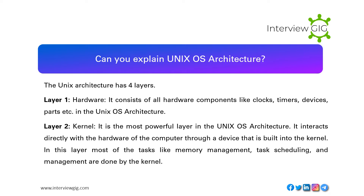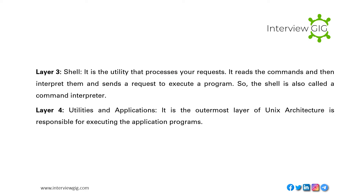In the kernel layer, most of the tasks like memory management, task scheduling, and process management are done. Layer 3 — Shell: it is a utility that processes your requests; it reads the commands, interprets them, and sends a request to execute a program. The shell is also called a command interpreter. Layer 4 — Utilities and Applications: it is the outermost layer of Unix architecture and is responsible for executing application programs.